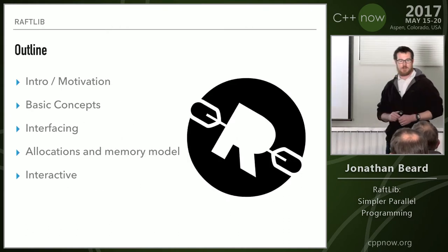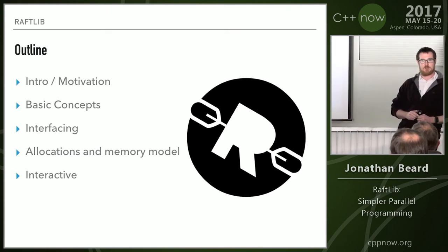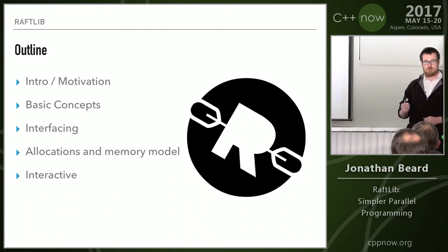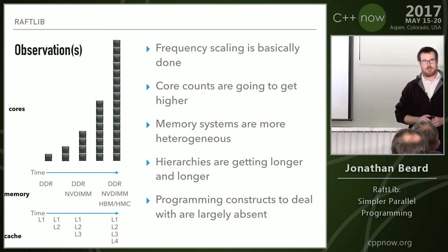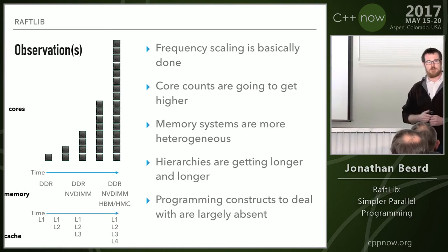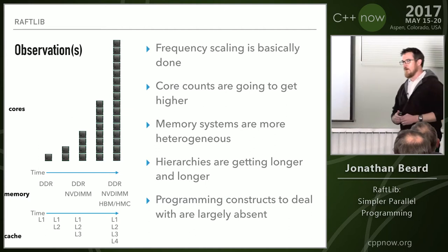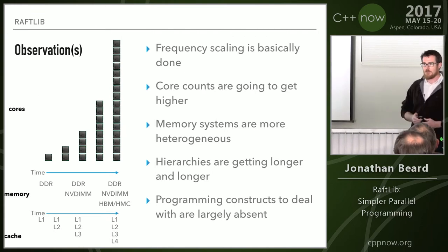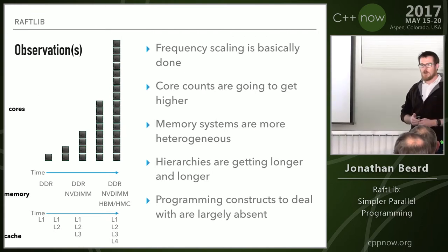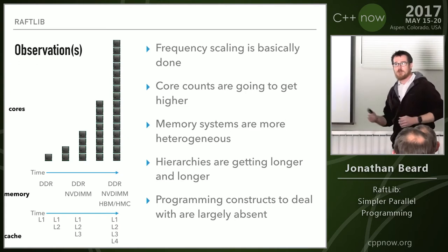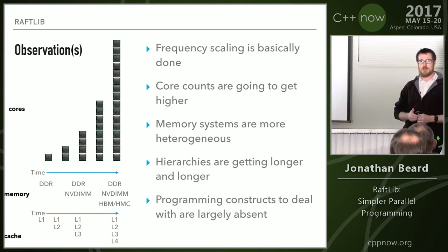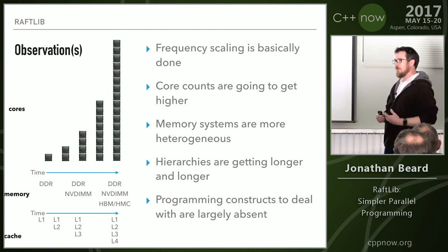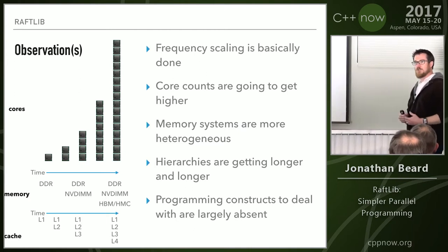So the obligatory outline slide — I'm not going to talk through it, you can read. We'll start with some introduction, get into the meat, and hopefully some interaction towards the end. Motivation: back when I started programming I was using a Commodore 64, obviously one core. In the mid-90s we started getting multiple sockets, still single core per socket. Then dual cores. Now we're talking 128-plus cores per socket — an insane amount of complexity — and I don't think most of our current programming models and paradigms actually fit that.